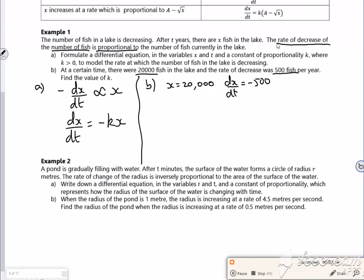So dx/dt is minus 500 equals minus k times 20,000. So I've got minus 500 over minus 20,000 equals k. And that gives a k value of 1 over 40.